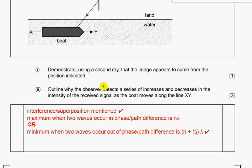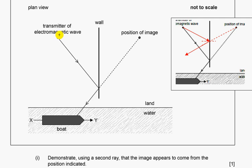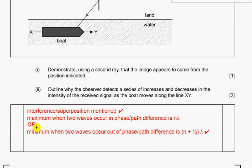Outline why the observer detects a series of increases and decreases in intensity of the received signal as the boat moves along the line XY. Here we have two sources of waves: one from the transmitter itself, another from the image position. Along XY we will get constructive and destructive interference. Constructive interference if path difference is nλ, destructive if it is (n+1/2)λ.